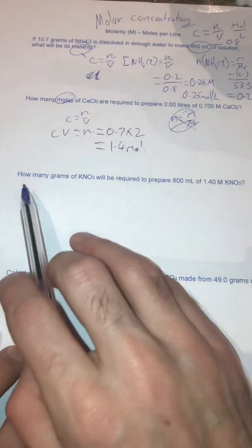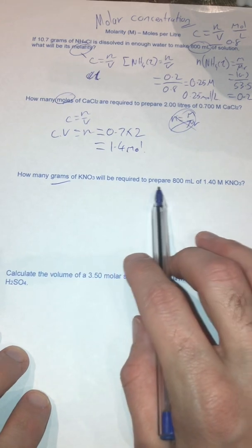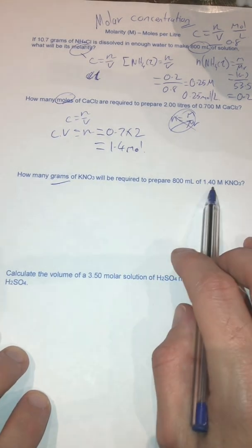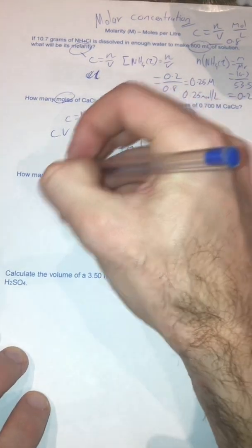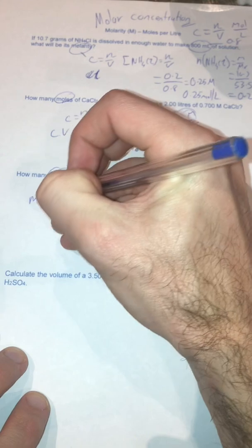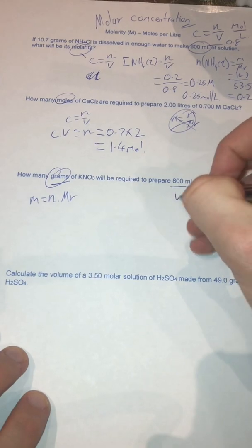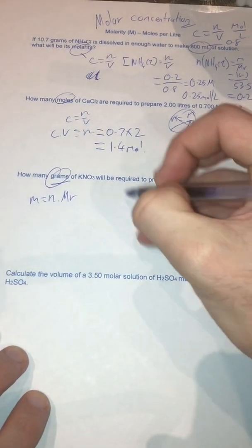Next question up is how many grams do I need of potassium nitrate to create an 800 ml solution of 1.4 molar? So looking at this, I know I need my grams, that's my mass. Mass equals number of moles times molar mass. Now I haven't got a number of moles, but I do have, what have I got? I've got volume and I've got concentration. So therefore I need to work out number of moles.